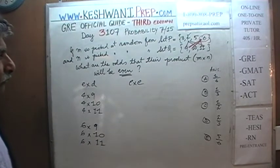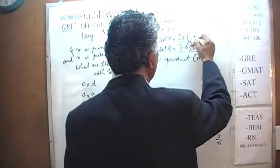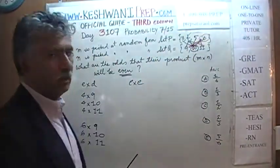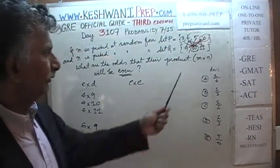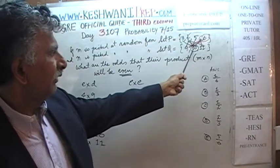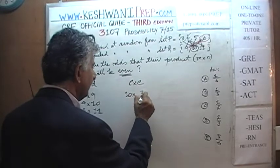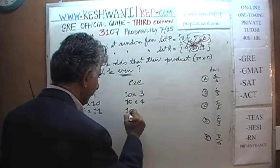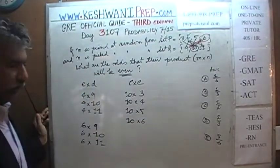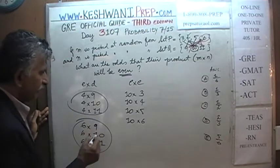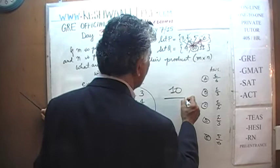We also have 10 in set Q. We can do 10×3, 10×4, 10×5, and 10×6 — those will also give us an even product, because 10 is even. So we have 3 possibilities from the 4s, 3 possibilities from the 6s — that's 6. And 4 possibilities from the 10s — that gives us 10 total possibilities.